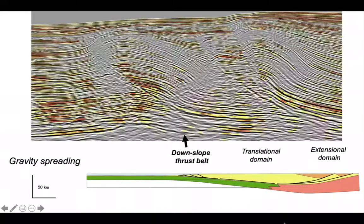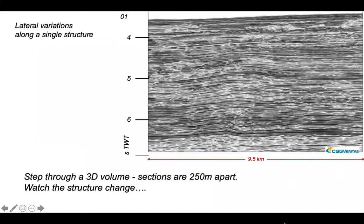Let's look at the Niger Delta thrust belt. There are really dramatic structures where sediment is ponded around growing folds. Some of these structures have been imaged in three dimensions seismically. We can use these data to understand lateral variations along a single fold-thrust structure. We're going to serial section one of these folds, stepping through the 3D volume slice by slice — each section is 250 metres apart — to see how the structure changes along strike.